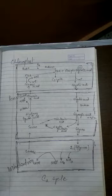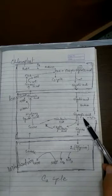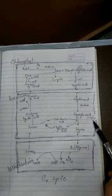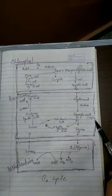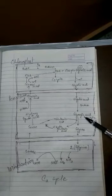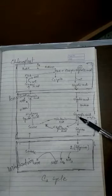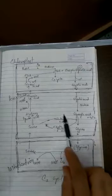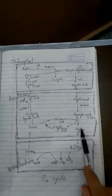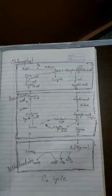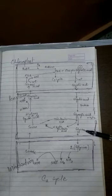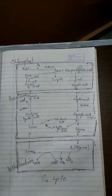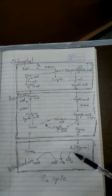In the peroxisome, glycolic acid undergoes oxidation to change into glyoxylic acid with the liberation of H₂O₂ (hydrogen peroxide), which is poisonous and is quickly converted into water and oxygen. Then glyoxylic acid undergoes transamination — it picks up an amino group from glutamic acid — and changes into the amino acid glycine.